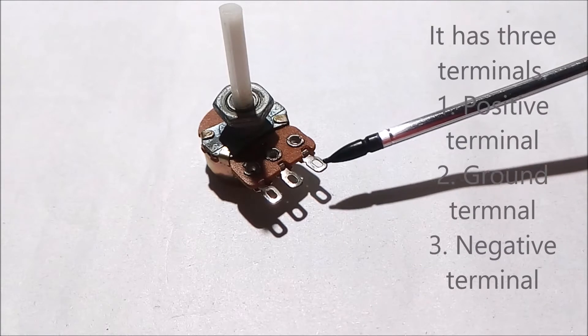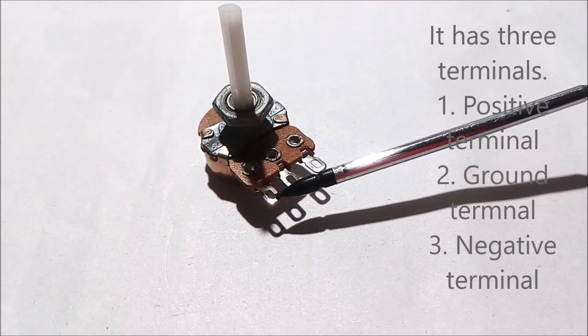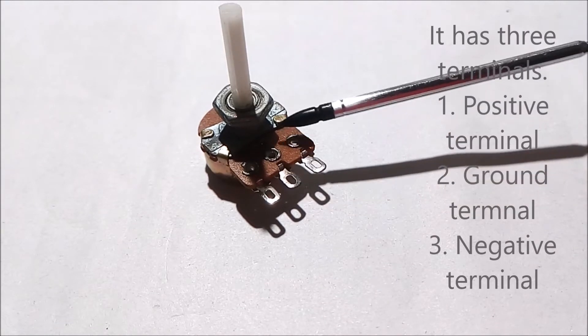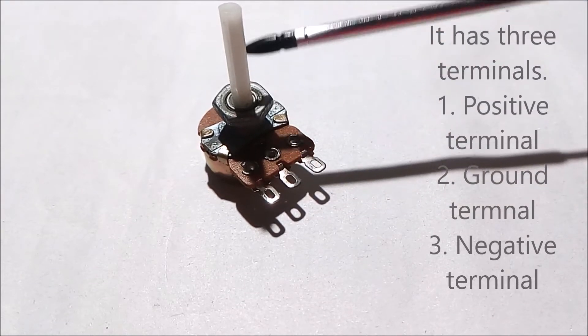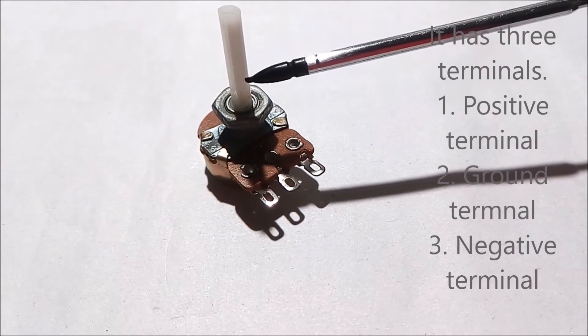This is the first terminal, this is the ground terminal and this is the third terminal of a variable resistor. This is the probe which we can move in clockwise or anticlockwise direction to change the value of resistance.